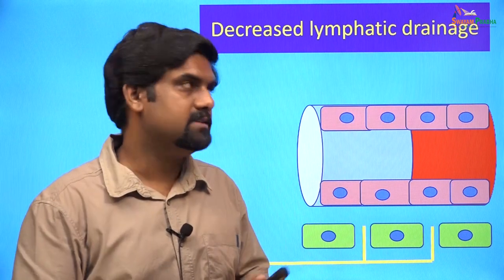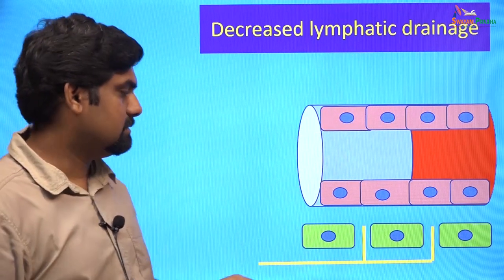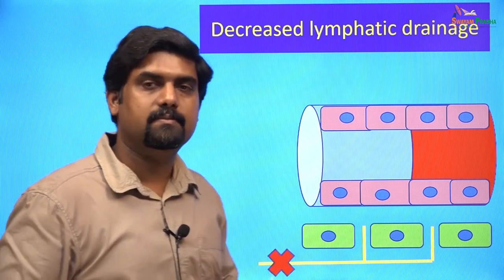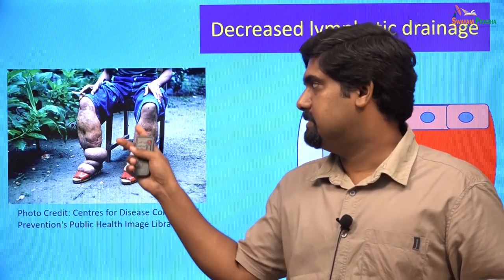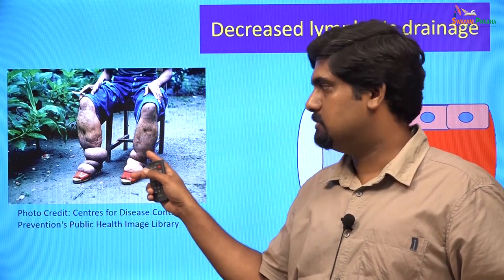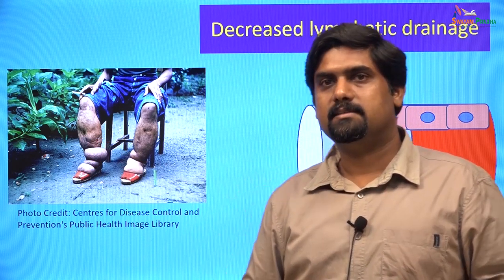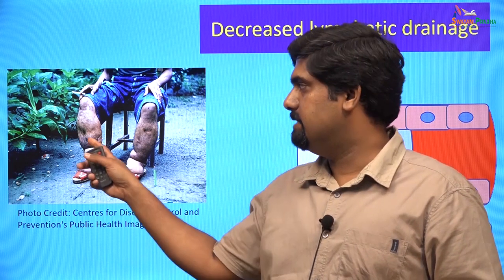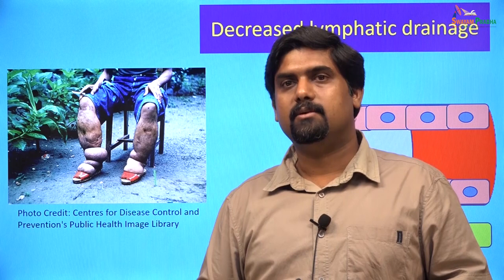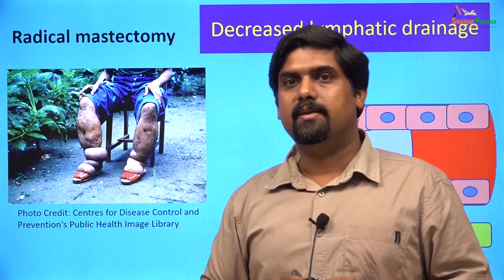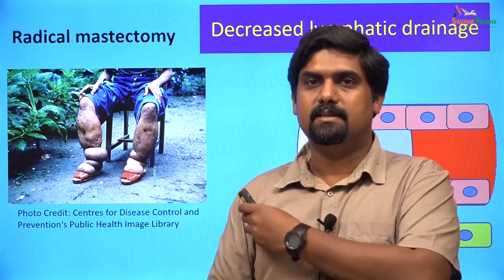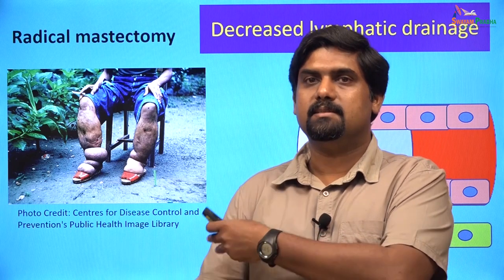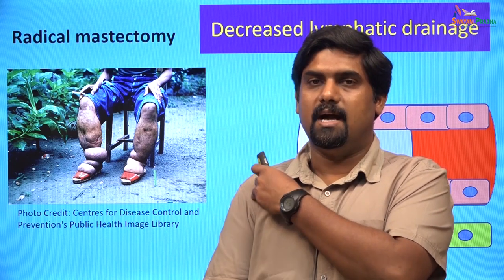Another cause for edema is decreased lymphatic drainage. This is caused by conditions like filariasis, where the lymphatic vessels are blocked by the filarial parasite. This is the picture of a patient with filariasis of the lower limbs showing edema. This condition is characterized by chronic inflammation leading to fibrosis, and therefore the edema can later become non-pitting. Another cause for edema is radical mastectomy, where the breast is removed along with the axillary lymph nodes for the treatment of breast cancer. The removal of the axillary lymph nodes will decrease the lymphatic drainage from the arms, leading to edema.